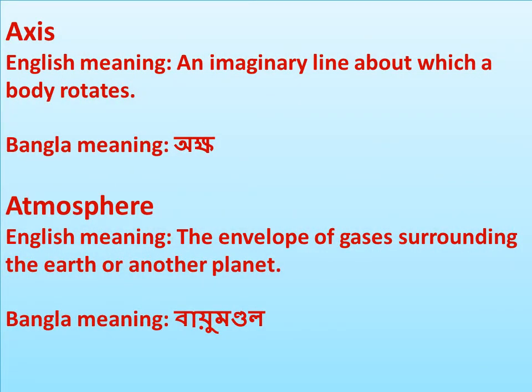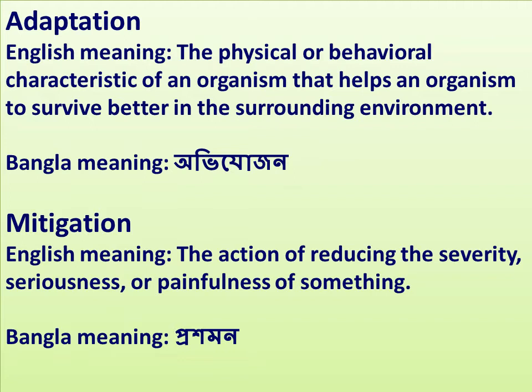Axis: an imaginary line about which a body rotates. In Bangla the meaning is okko. Atmosphere: the envelope of gases surrounding the earth or another planet. In Bangla: bayi mondul.